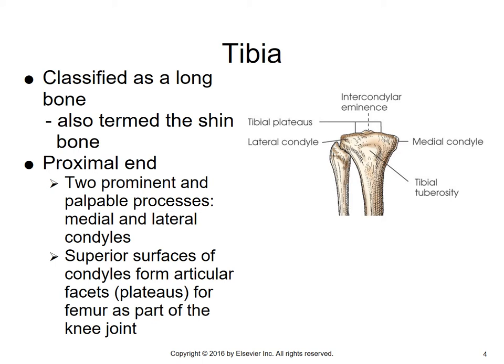The tibia is classified as a long bone — a layman's term, your tibia is your shin bone. Starting proximally, you can see you've got something called tibial plateaus. You've got two condyles, something called an intercondylar eminence, and then a tibial tuberosity. Two of the processes are very palpable: your medial and your lateral condyles. The superior surfaces of the condyles are somewhat flattened, so we call these articular facets or plateaus.